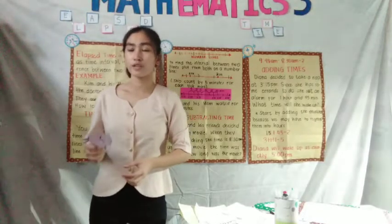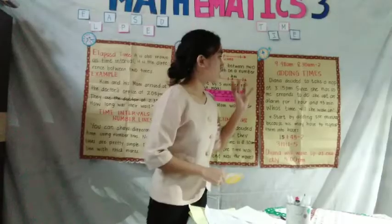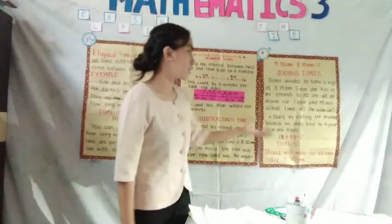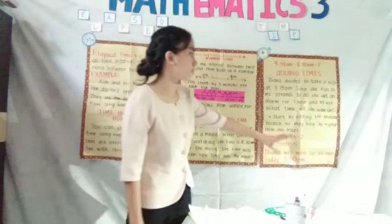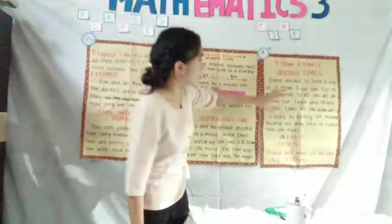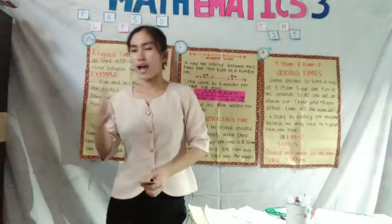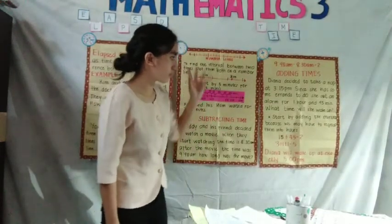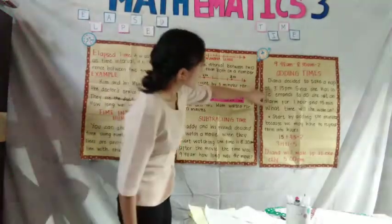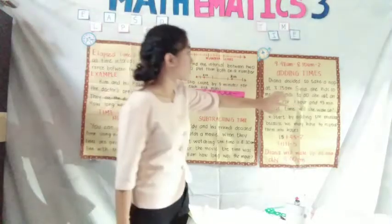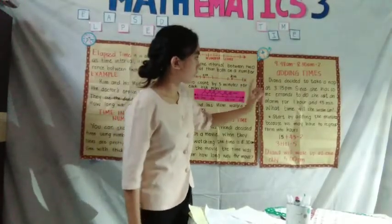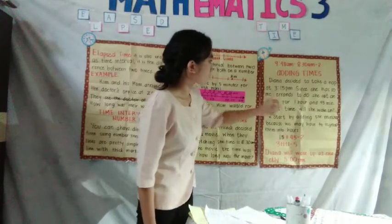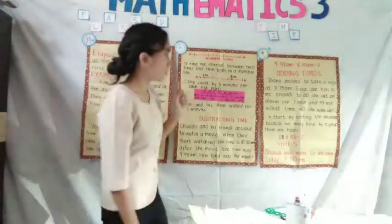Raise your hand if you have any questions. All right. Diana has some errands to do. She set an alarm for 1 hour and 45 minutes. What time will she wake up? So we have to start by adding the minutes because we may have to regroup them into hours. So in adding times, we have to divide it or we have to regroup them. So let's start by adding the minutes. 15, which I get from 3:15 PM when she takes a nap, we have to add 15 plus 45 minutes.